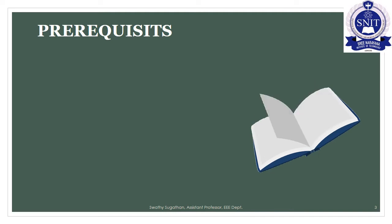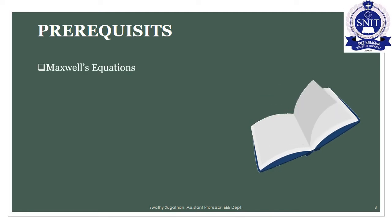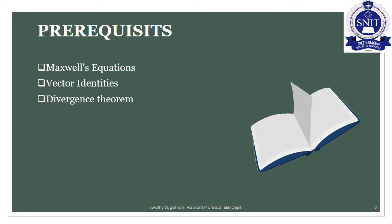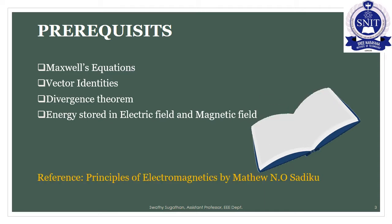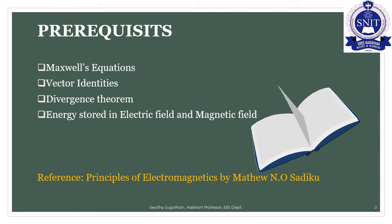In order to study this module we need to know certain concepts from previous modules: Maxwell's equations, studied in module 4; vector identities from Maths class; the Divergence theorem from module 1; and energy stored in electric and magnetic fields from module 4. For further reference, you can refer to the textbook Principles of Electromagnetics by Matthew Endu Sadikyu.